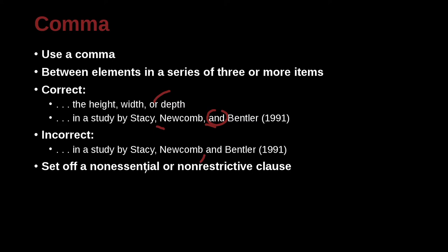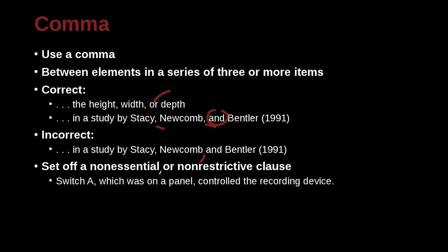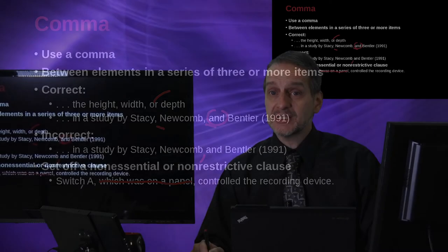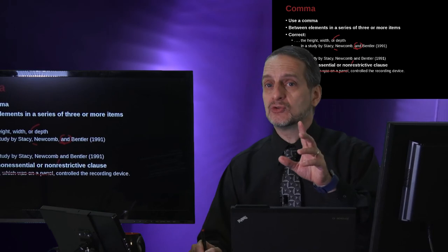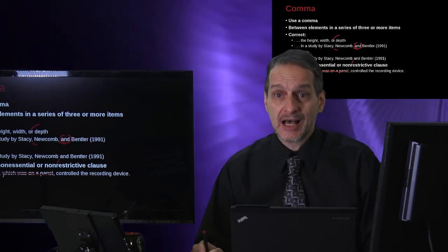You use a comma to set off a non-restrictive or non-essential clause. For example: 'Switch A, which was on a panel, controlled the recording device.' The easy way to think about this is if you have a phrase like 'which was on a panel' — this is describing something. If you can cut it out and read the sentence without it — 'Switch A controlled the recording device' — and that is a complete sentence, then this clause is a non-restrictive clause. That means you do not have to have it, and if you do not have to have it, then you need to use a comma to separate it.